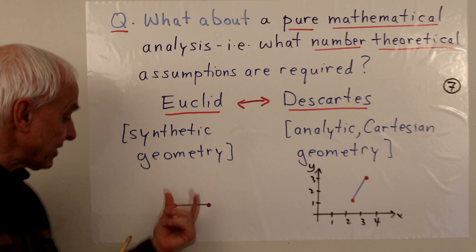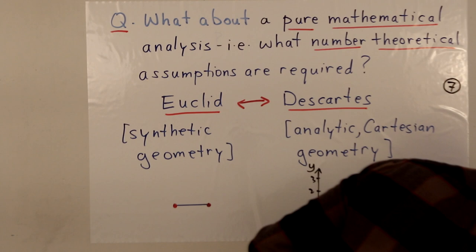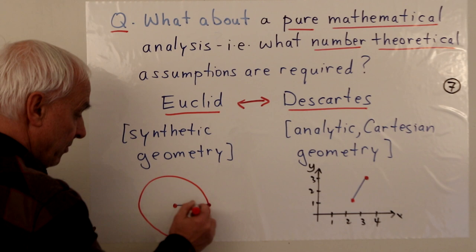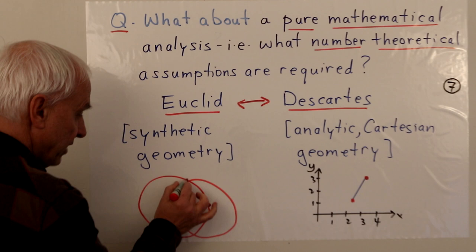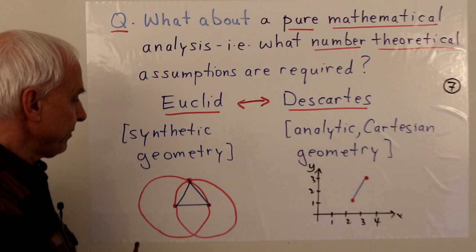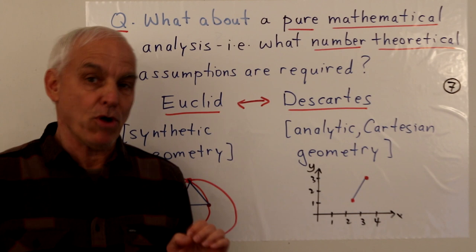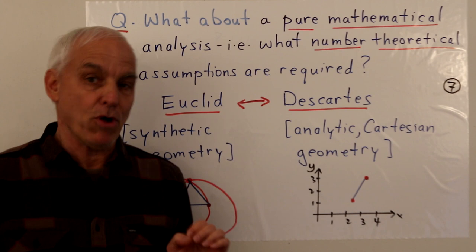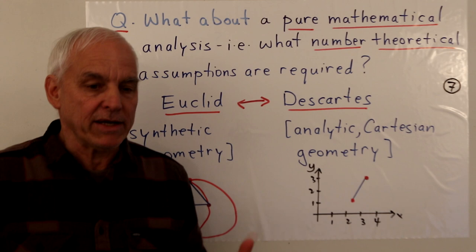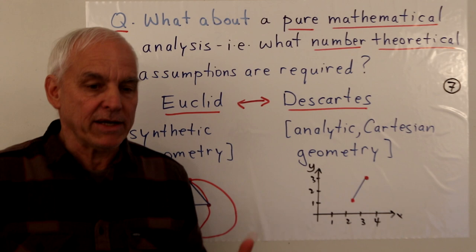There is a tension between these two geometries. In the very first theorem of Book One of Euclid, he asks how to construct an equilateral triangle on a given base. You construct a circle centered at one endpoint through the other, and another circle centered at the other endpoint through the first, and their intersection gives the third vertex. But in recent centuries people have realized there's a logical problem: how do you know these two circles actually meet in a point? That is not one of Euclid's axioms — he neither assumes it nor proves it. Two general circles don't necessarily have to intersect.